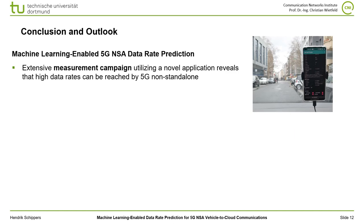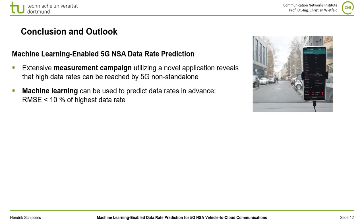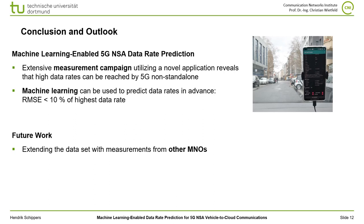To conclude, an extensive measurement campaign with an above-average number of measurements compared to related work has been conducted utilizing a novel application. High data rates were measured using 5G non-standalone mode, and machine learning is used to predict end-to-end data rates in advance. A comparably small root-mean-squared error of lower than 10% of the highest data rate could be reached in all configurations. In the future, we are planning to extend our dataset with measurements from other mobile network operators, perform 5G standalone measurements and compare results with non-standalone, and utilize radio-environmental maps for geospatial data aggregation.